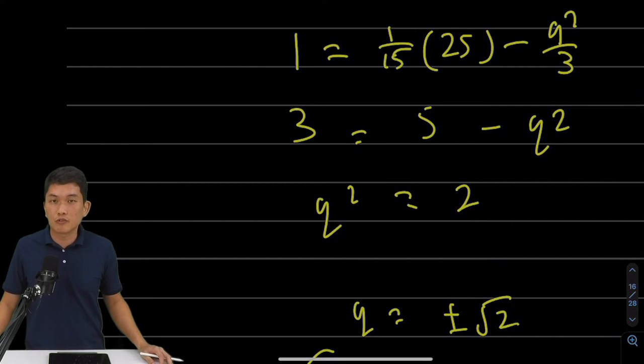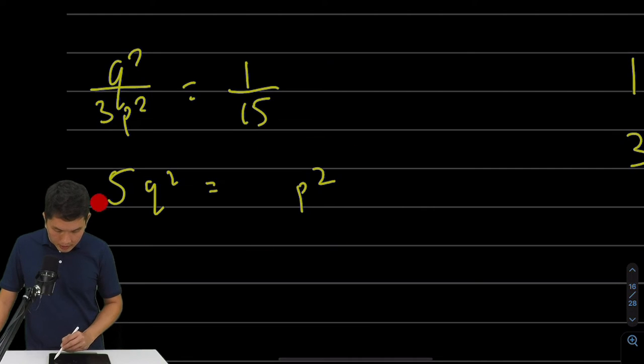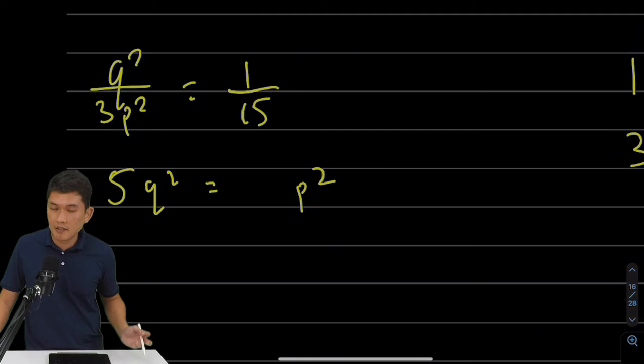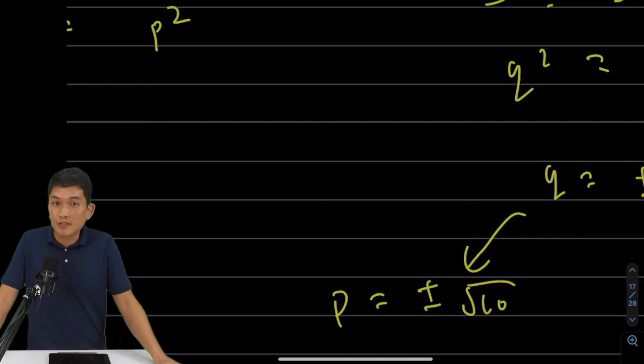Or rather, q-square is equal to 2. Now if you substitute this back into our original equation here, then you get 5 times 2 equals to p-square. So p-square is equal to 10. p equals to plus minus square root of 10. And that is the answer for part 1.